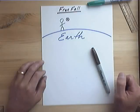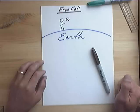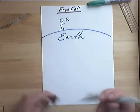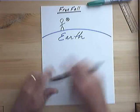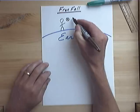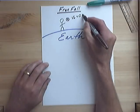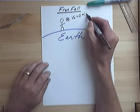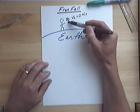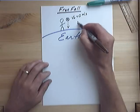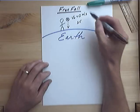Here we are standing on the Earth holding some sort of basketball. So if we let this basketball go, it starts off with an initial velocity of zero. But it speeds up and falls towards the Earth. So we have a change in velocity.